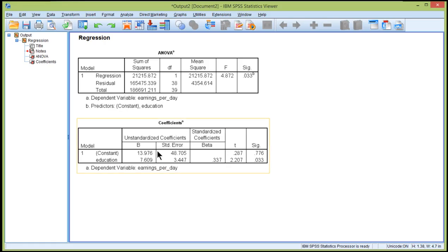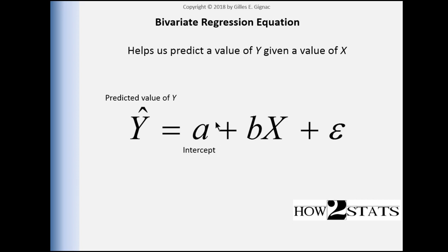The intercept in this analysis, for the example of education and earnings, was estimated in the regression analysis at 13.976. So we would predict, on average, a person with zero years of education would earn $13.98. That's the intercept, and we start with that.